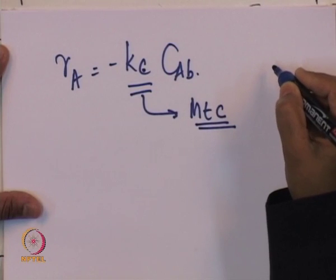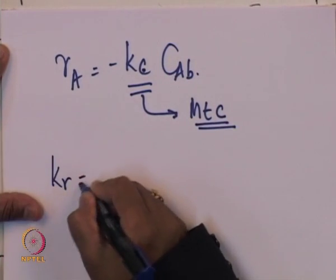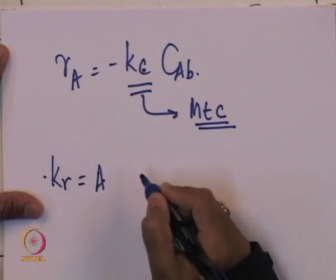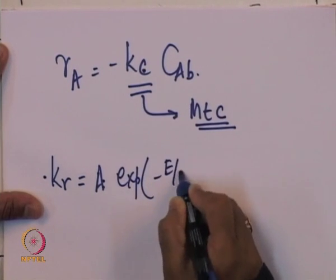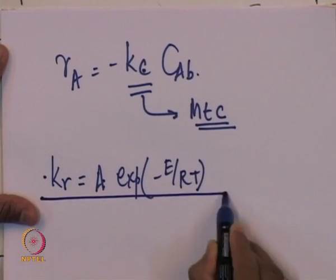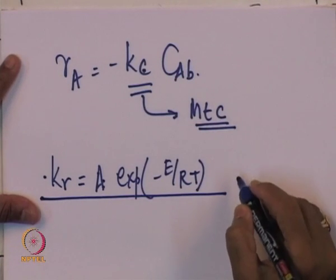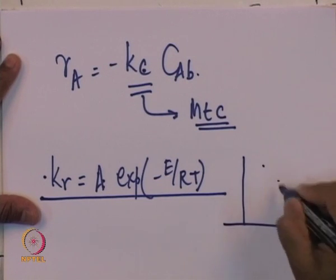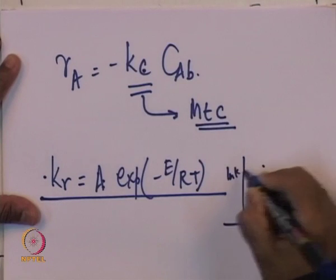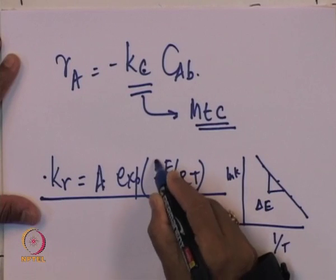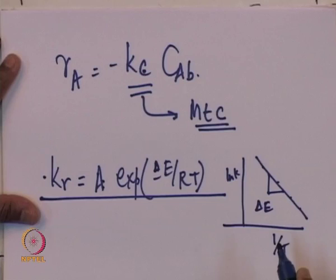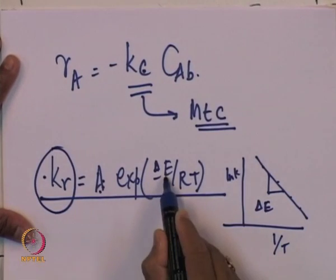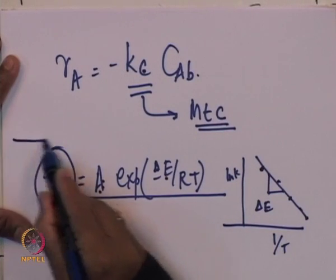We know kr is a rate constant with a frequency factor of the same unit, and it follows the Arrhenius form: kr = A·exp(-E/RT), where this is per unit external surface area. It is straightforward to determine kr experimentally: do experiments at different temperatures, plot ln(k) versus 1/T — the slope gives activation energy E and the intercept gives A. So for a normal reaction controlled by intrinsic kinetics, designing a reactor is straightforward.